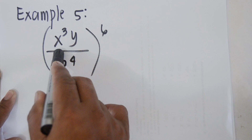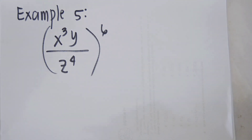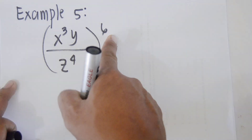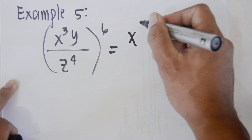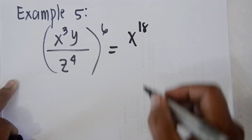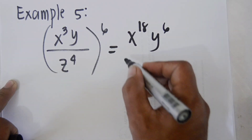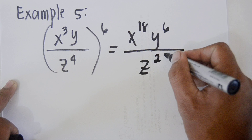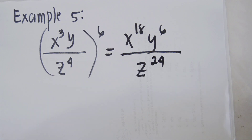Example number 5: the quantity of x cubed times y over z to the power of 4, raised to the power of 6. Distribute 6 to each term. For x: 6 times 3 equals 18, so x to the power of 18. For y: 6 times 1 equals 6, so y to the power of 6. In the denominator, z: 4 times 6 equals 24, so z to the power of 24. That is our final answer, as this cannot be simplified further.